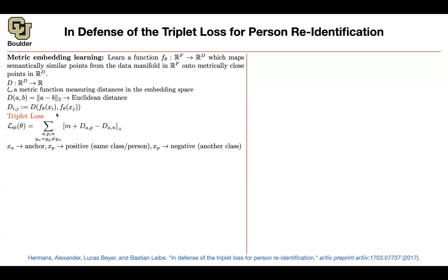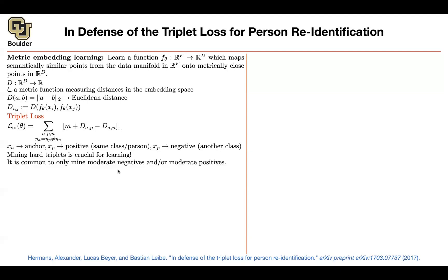Another problem: if you only show super hard examples, the algorithm focuses on outliers in your data. Any dataset, regardless of how clean, will have outliers in practice. If you penalize the algorithm too much for outliers, it will collapse. So people use soft versions of hard example mining — moderately hard negatives and hard positives. That was a quick recap of triplet loss.